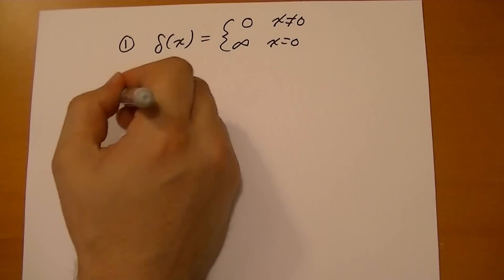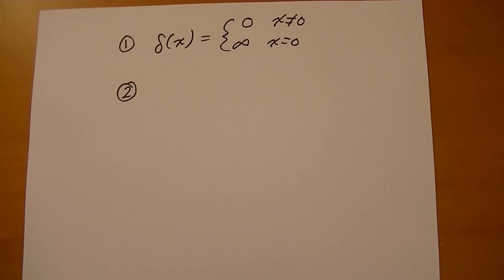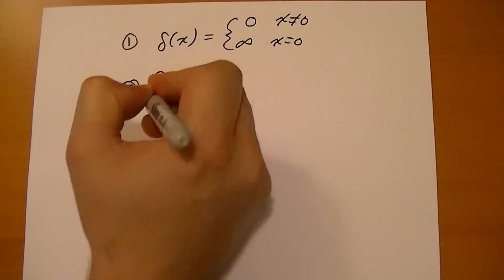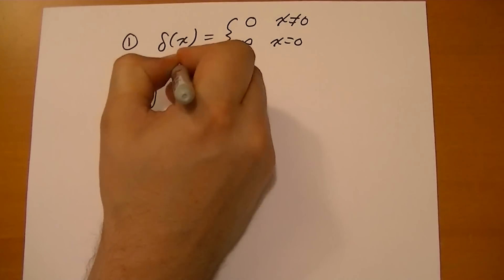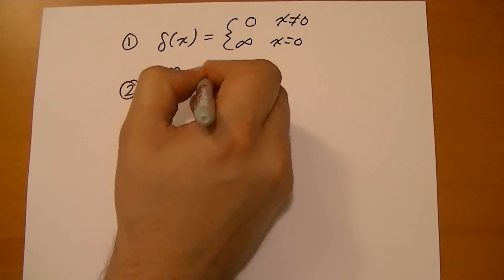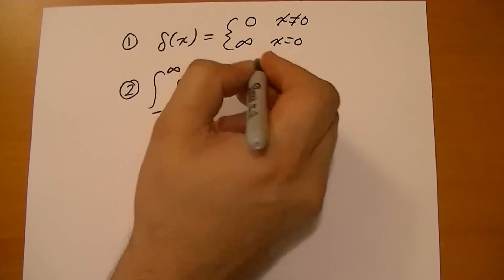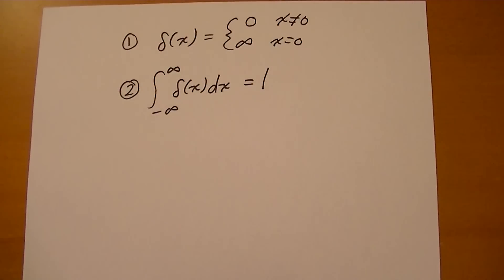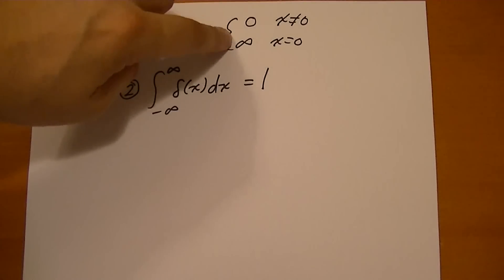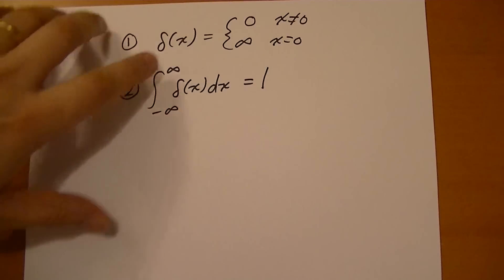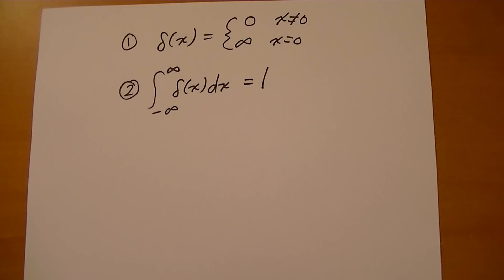And the second rule that it follows is kind of a weird rule. I don't think you've ever seen anything with a rule like this, is if you integrate over all space of this Dirac delta function, and the answer is one. Particularly, as long as you include that bump at x equals zero in your integral, the integral is going to be one. If you don't include it, then it's zero, of course.